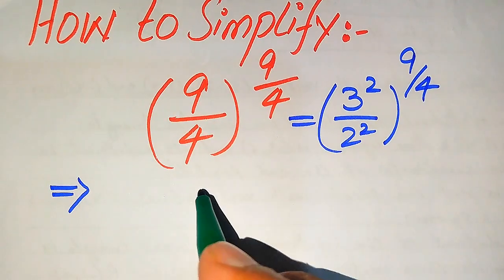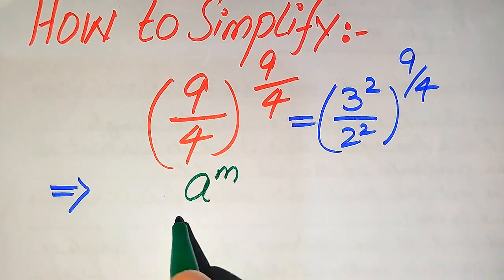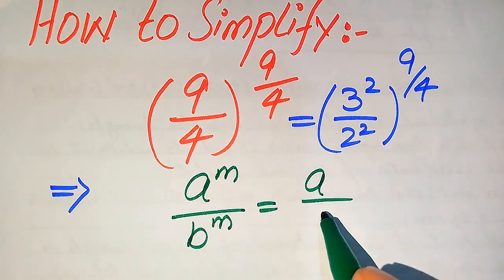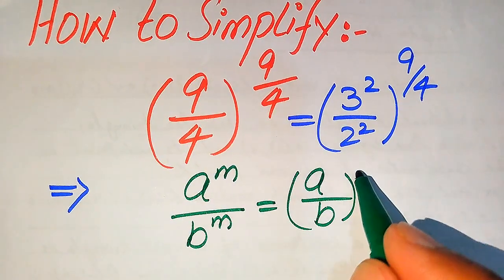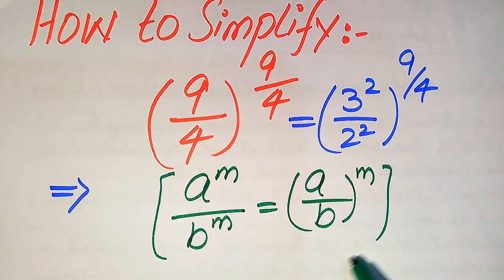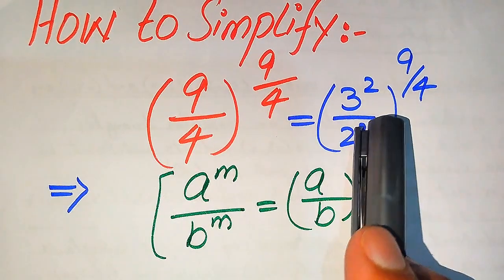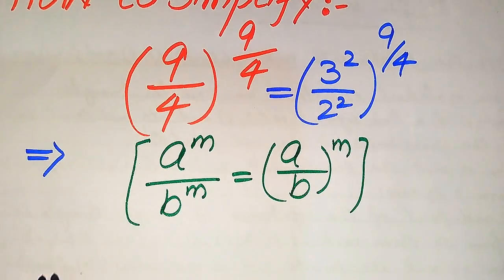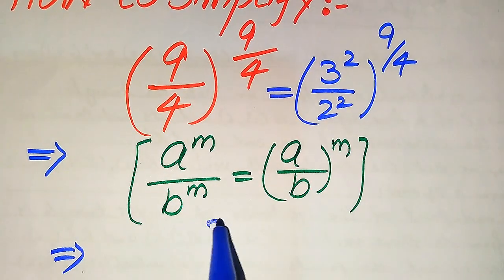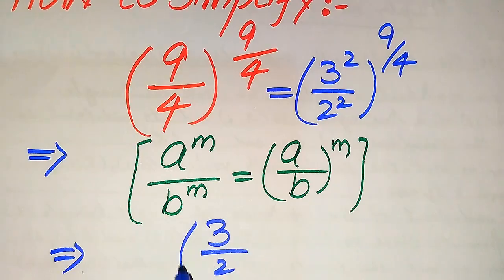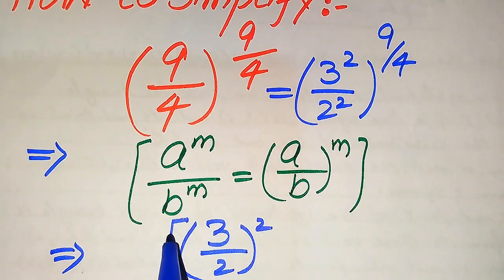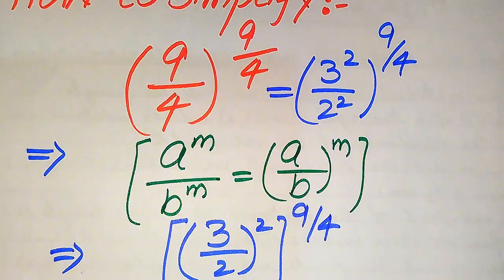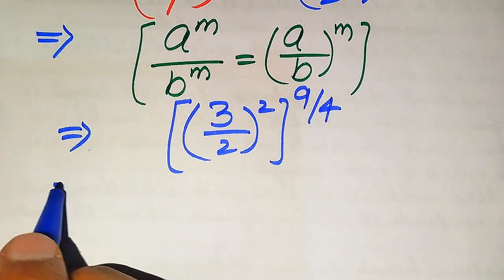In the next step we use the exponential law: if we have a to the power of m divided by b to the power of m, it can be written as (a over b) to the power of m. Applying this law to the base, it becomes (3 divided by 2) squared, with whole exponent 9 divided by 4.